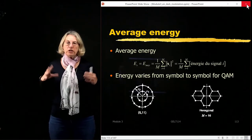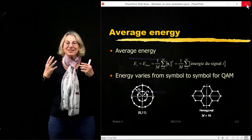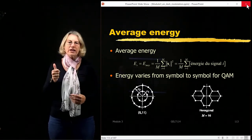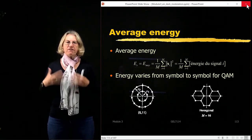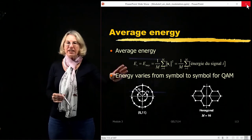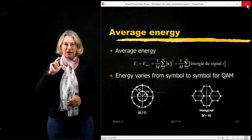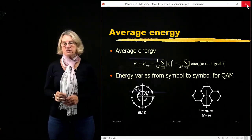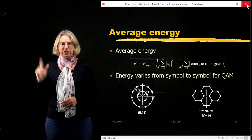When we're working with QAM, one of the most challenging parts is actually getting a good representation for the energy and doing the correct normalization. We're going to have to work on finding the average energy per symbol, because this is a very important parameter in the approximation coming from the union bound.